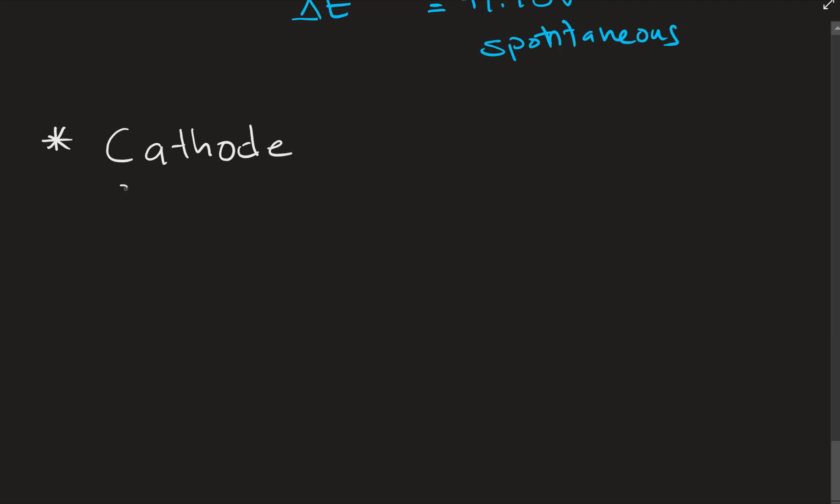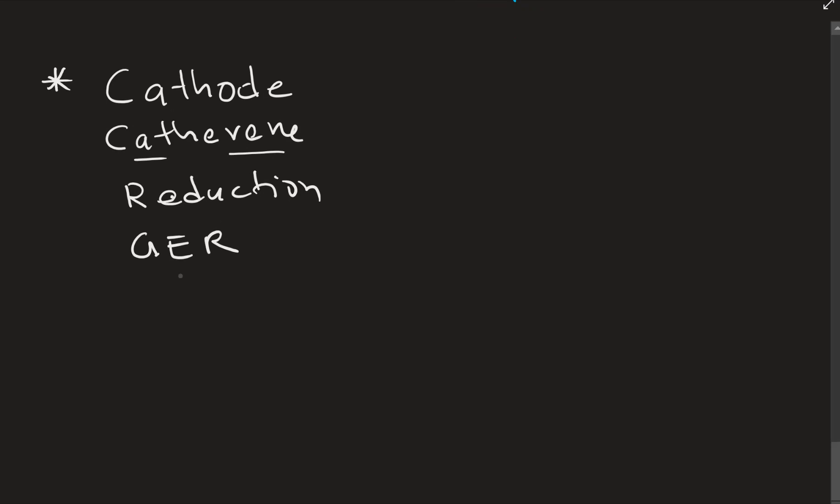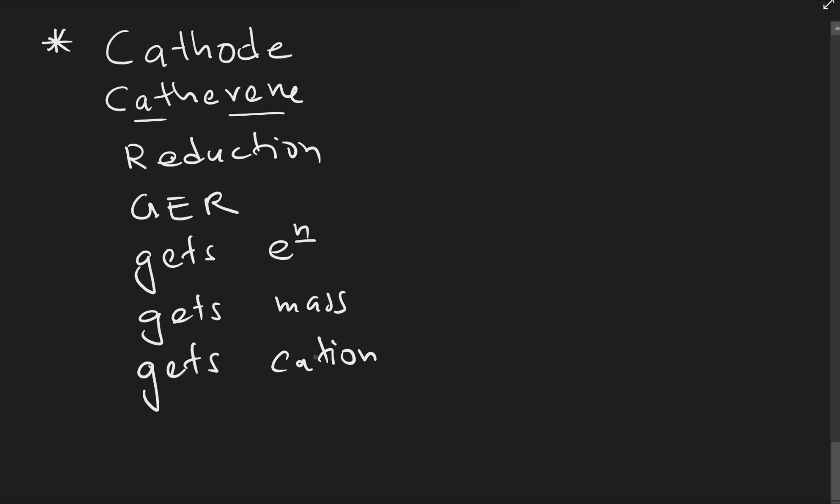Just to summarize: the cathode, I call it Catherine. Cathode does the reduction. The process never changes. Catherine does the reduction. That's also the girl - gets electrons, gets mass, gets cations. Catherine is a girl. It's an easy way to memorize. If you know everything about the cathode, you can simply reverse all these things for the anode. LEO, that's the LEO process, oxidation. Everything else on your left, cathode, is reversed in the anode. Thank you.